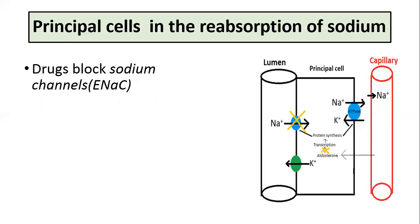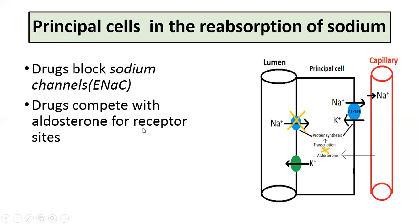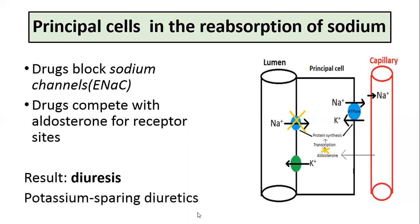The transporters of the principal cells involved in sodium reabsorption can be blocked. One group of drugs blocks the epithelial sodium channel on the luminal membrane, inhibiting sodium entry. This reduces sodium transport across the basolateral membrane, so less potassium is transported into the cells, reducing potassium secretion into the tubular lumen. A second group of drugs competes with aldosterone for receptor sites, inhibiting the stimulatory effects of aldosterone on sodium reabsorption and potassium secretion. The result is diuresis, and both these drug groups are potassium-sparing diuretics, meaning they decrease urinary excretion of potassium due to decreased potassium secretion.